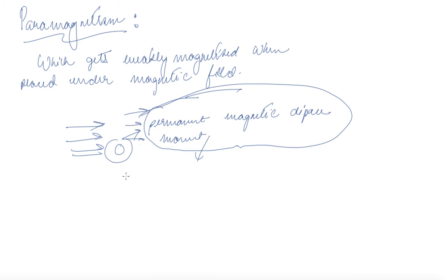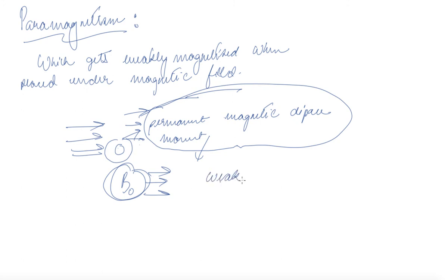If B₀ is the external magnetic field, it will cause the dipoles of the paramagnetic substance to align toward B₀. As a result, the substance tries to move from the weaker to the stronger magnetic field — the opposite behavior to diamagnetic substances.